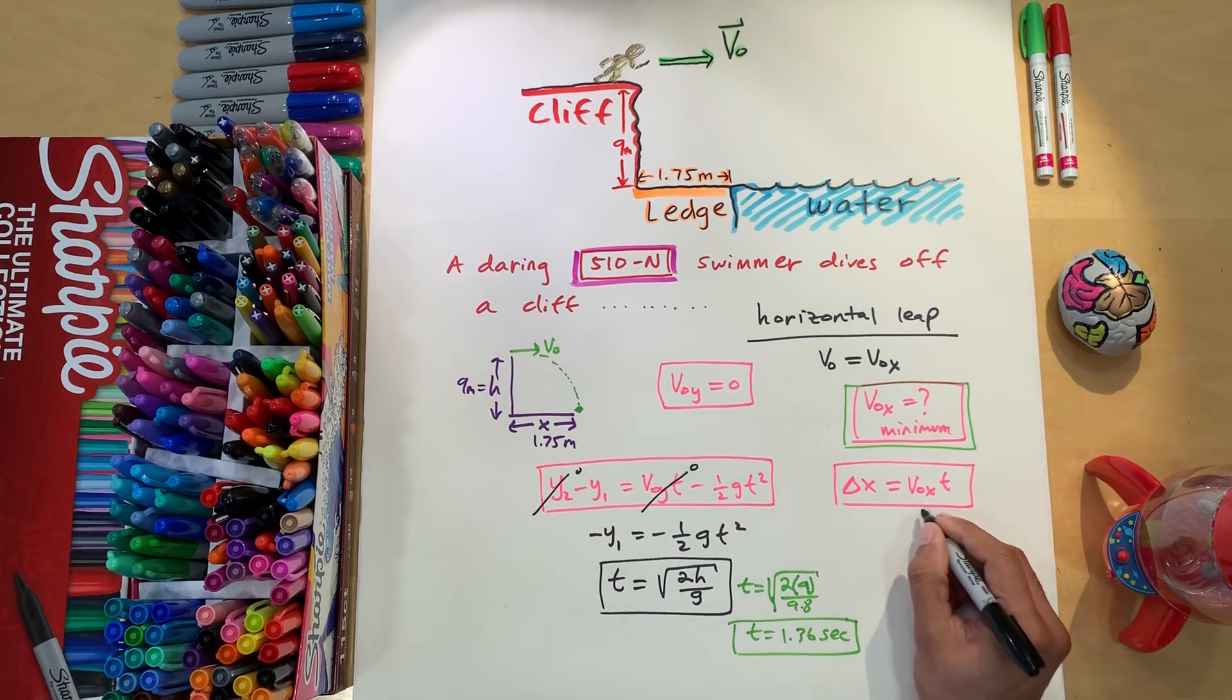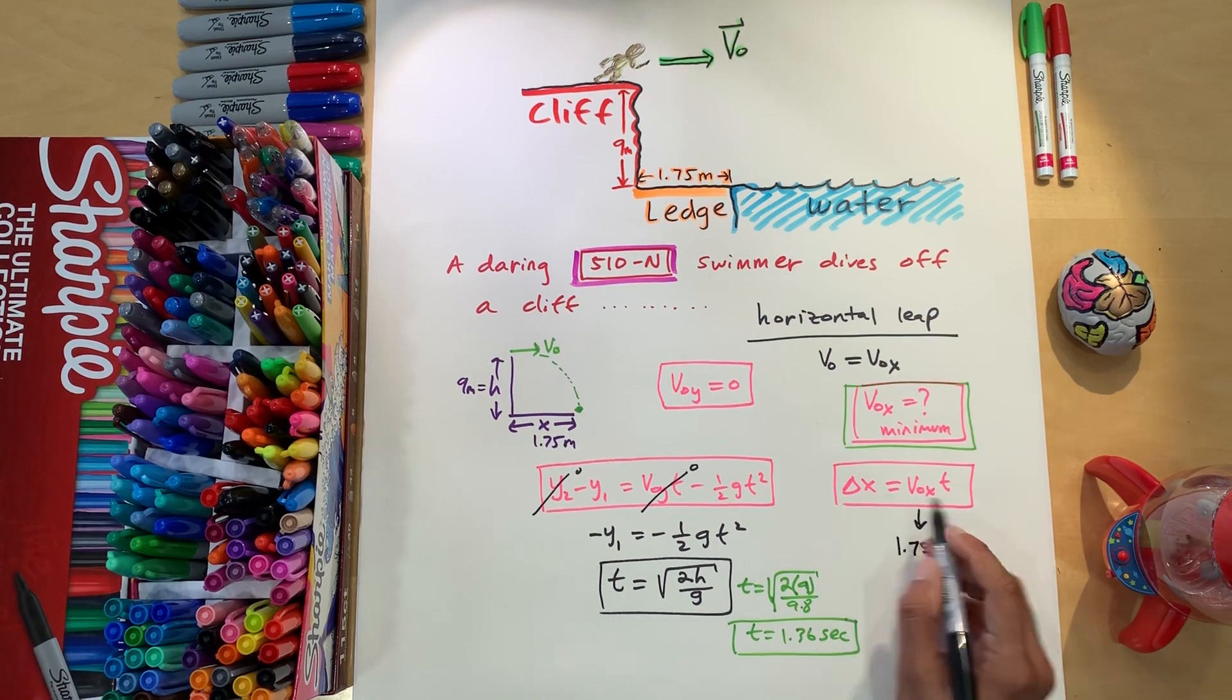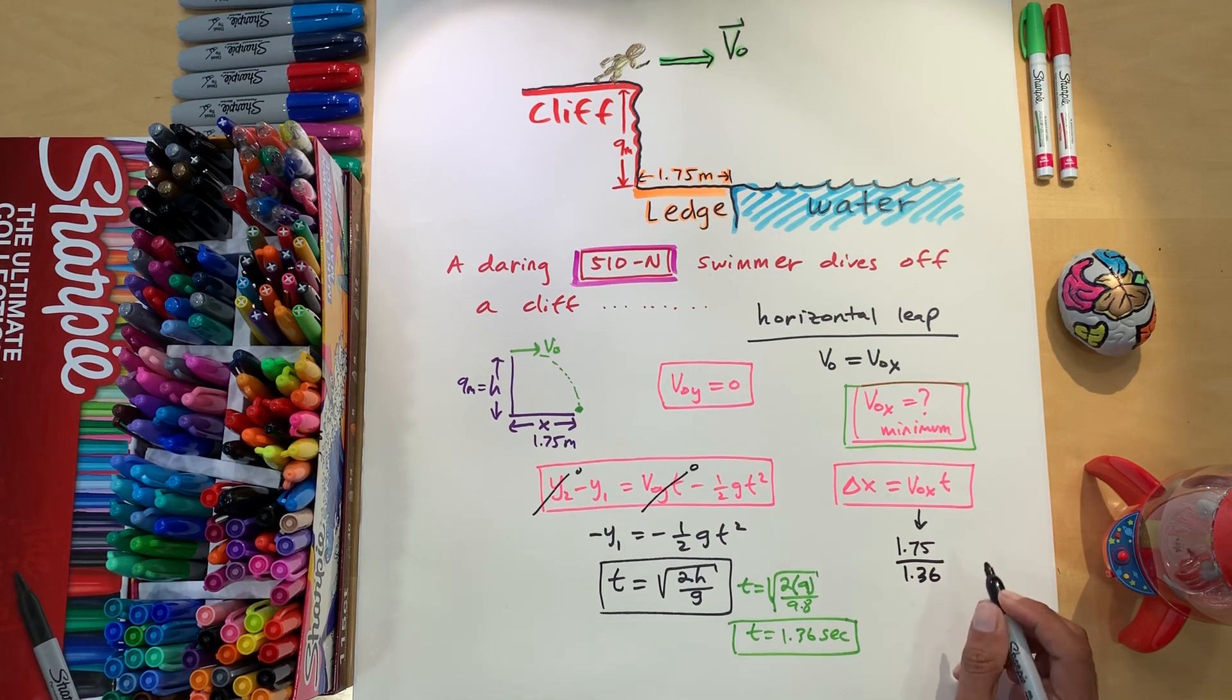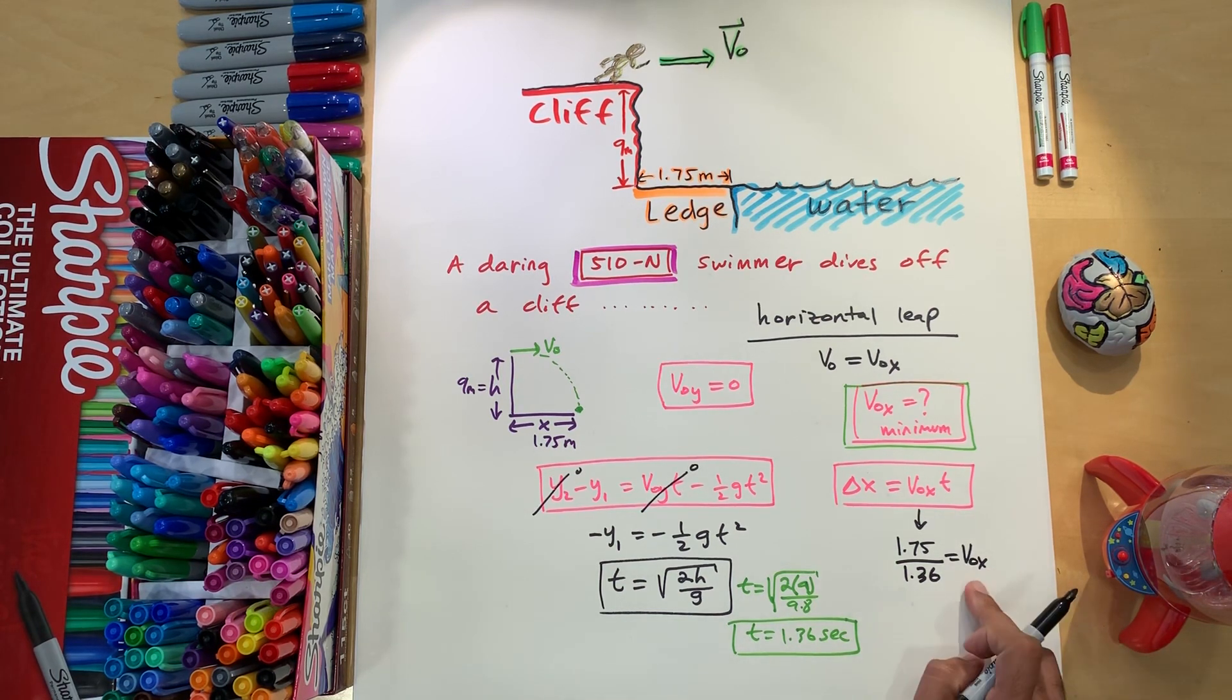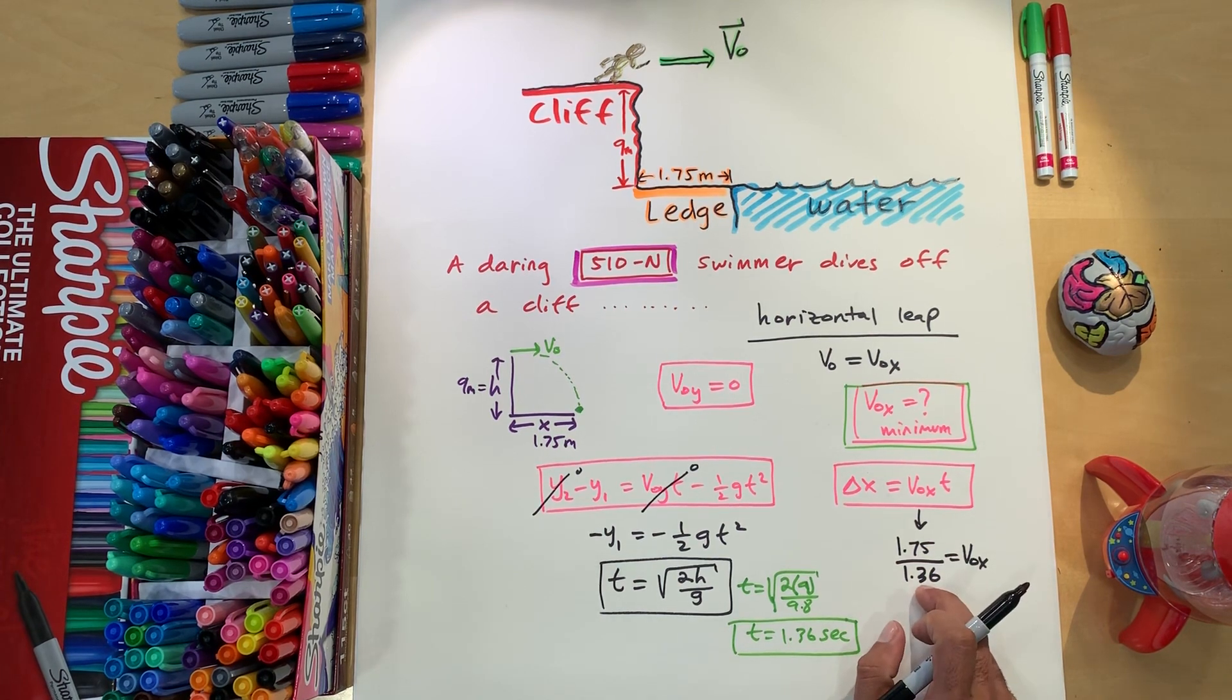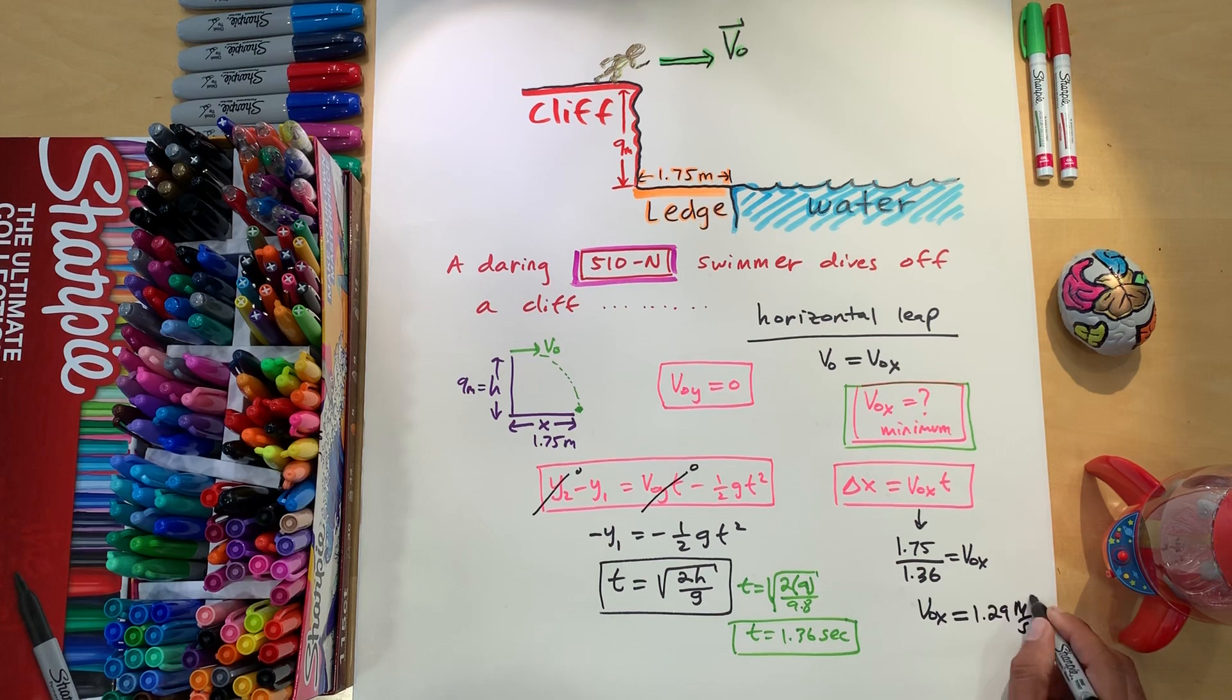All right, from here, now we put 1.75 for this. I'm going to divide by T, so that means dividing by 1.36, and our velocity initial in the X minimum that we're going to need to clear this much meters in this many seconds is going to be V initial in the X equals 1.29 meters per second.